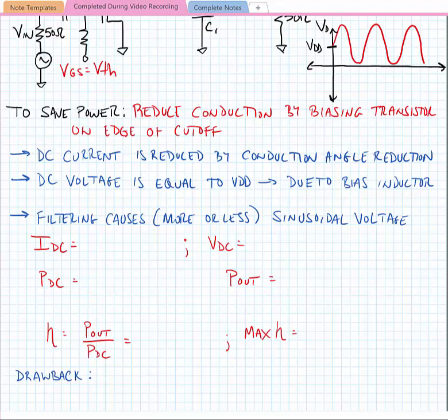So if we were to look at the DC current, we could find that the DC current has an average value given by 2 over pi times VDD divided by ROPT. We've already said that VDC has an average value of VDD, and so we can find our DC power as the product of these two.